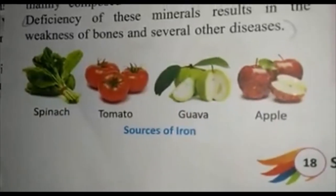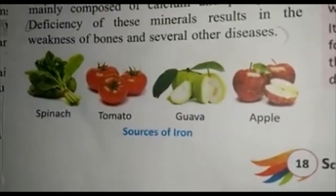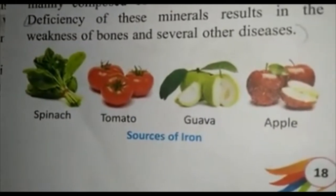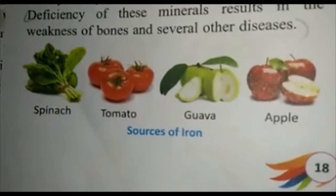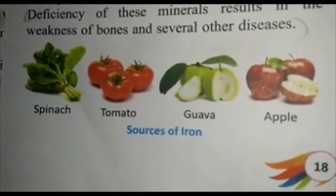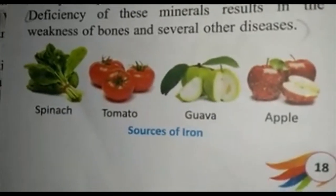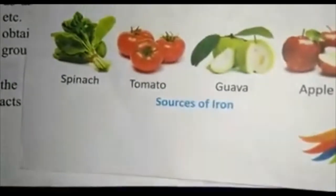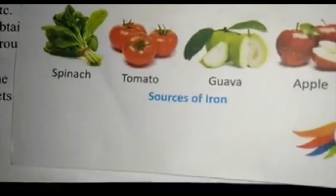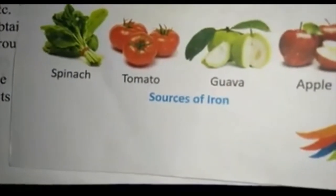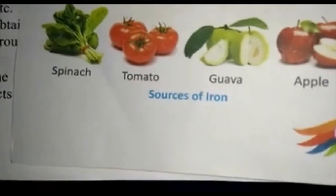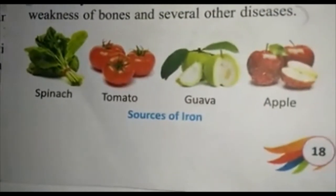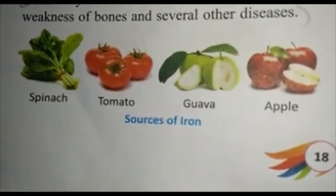Next, minerals. Minerals are the inorganic part of food. Minerals are required in very small quantities. They are natural elements which are necessary for the body. Deficiency of minerals results in weakness of bones and several other diseases. We obtain minerals from spinach, tomato, guava, apple, etc.